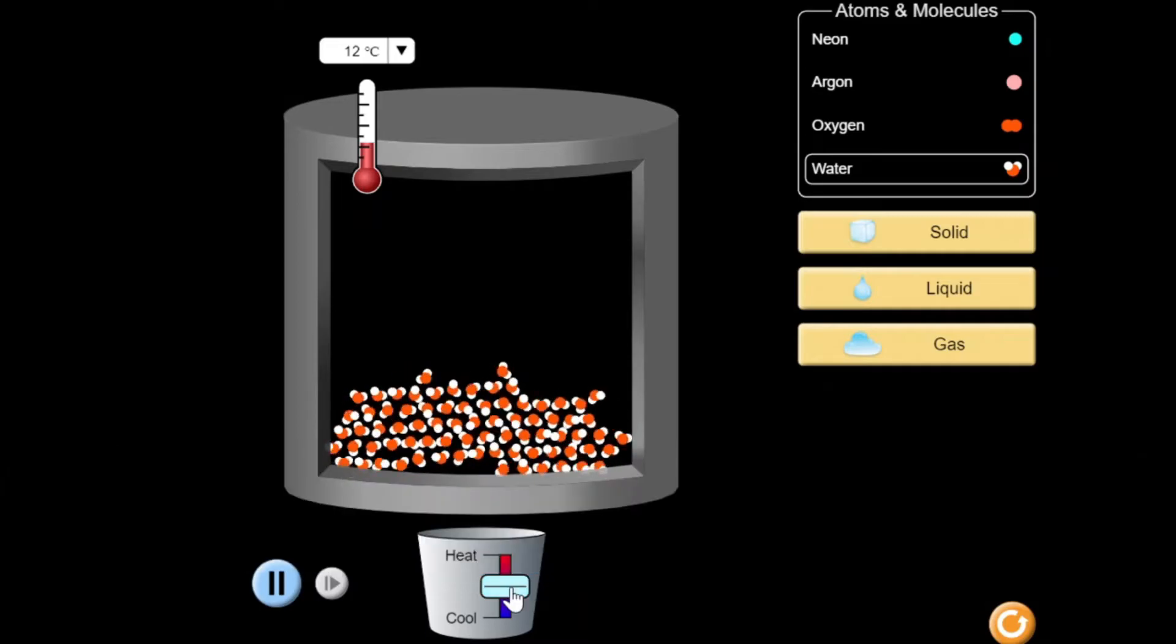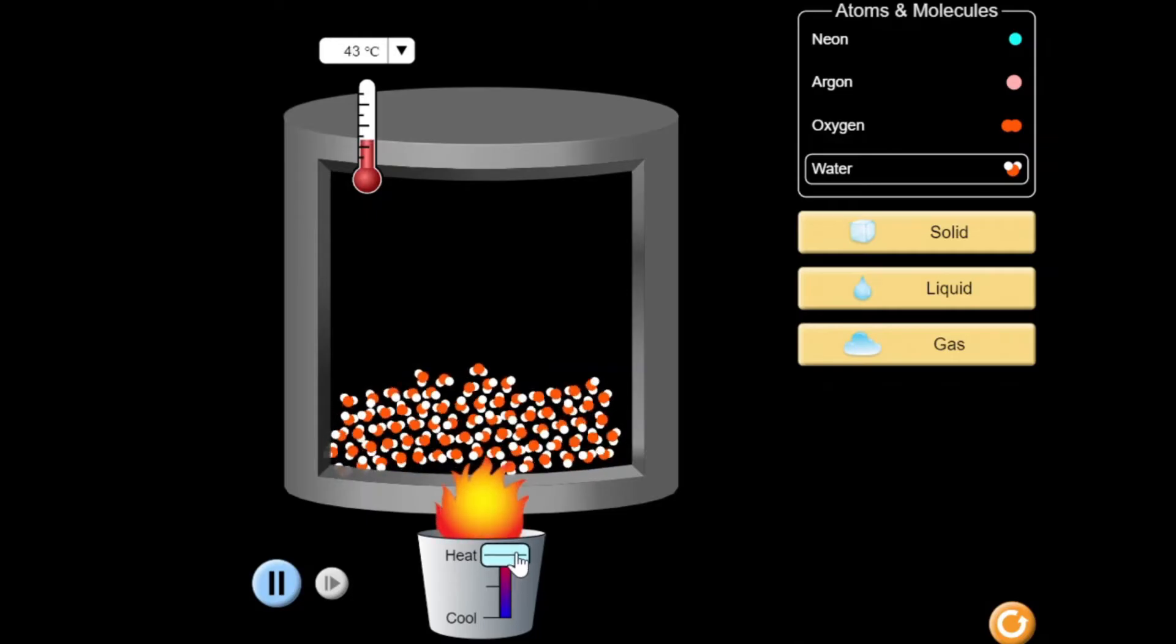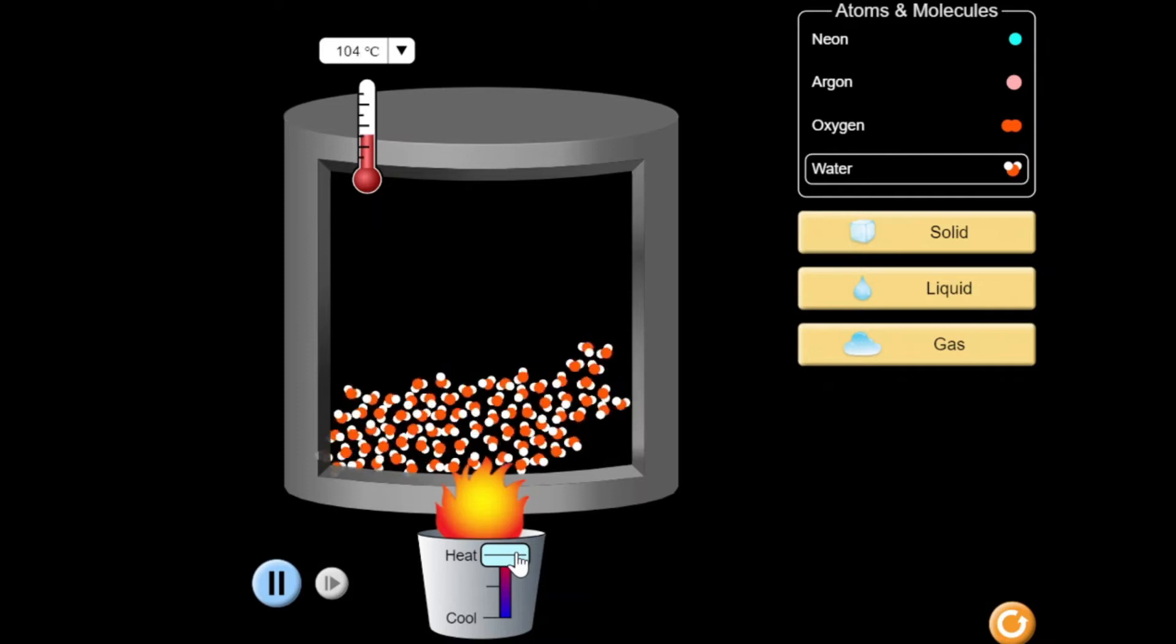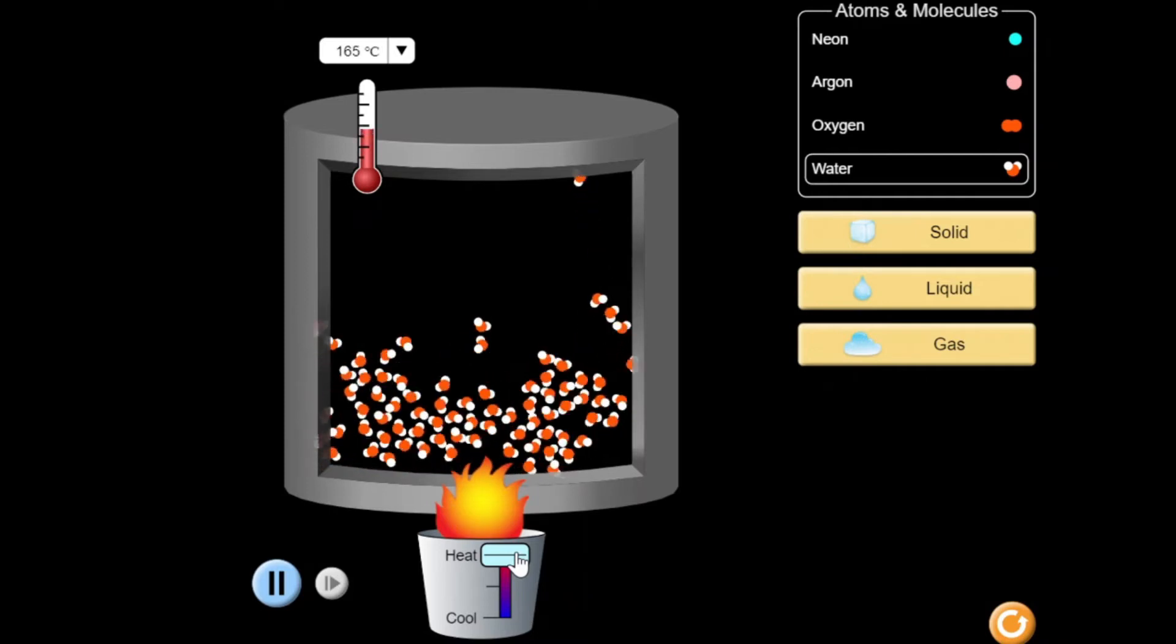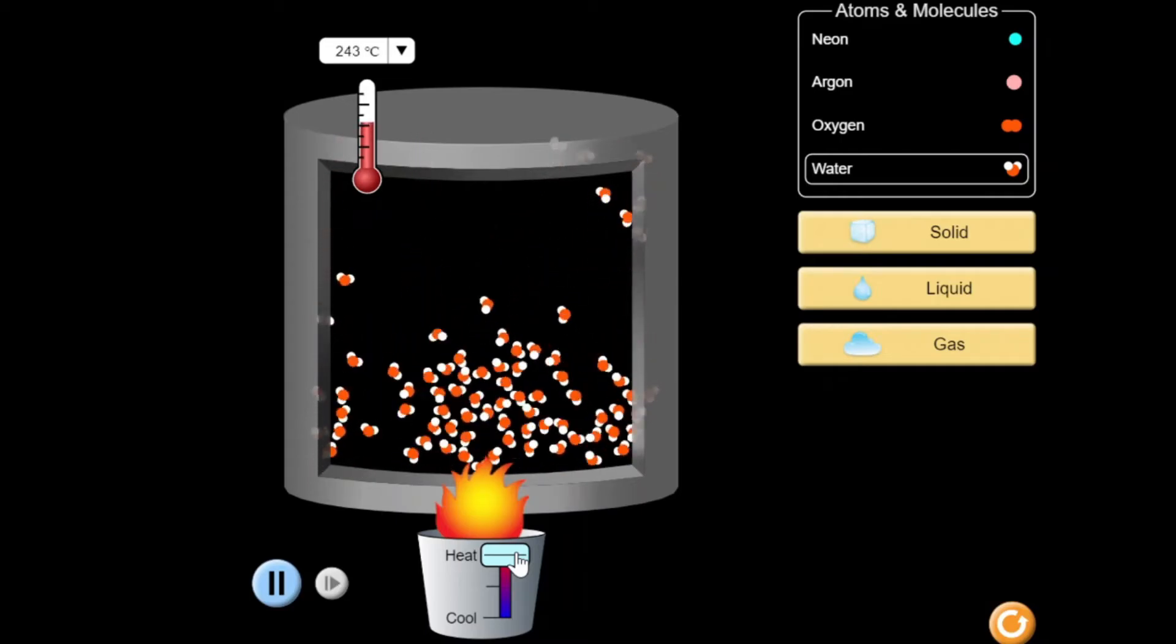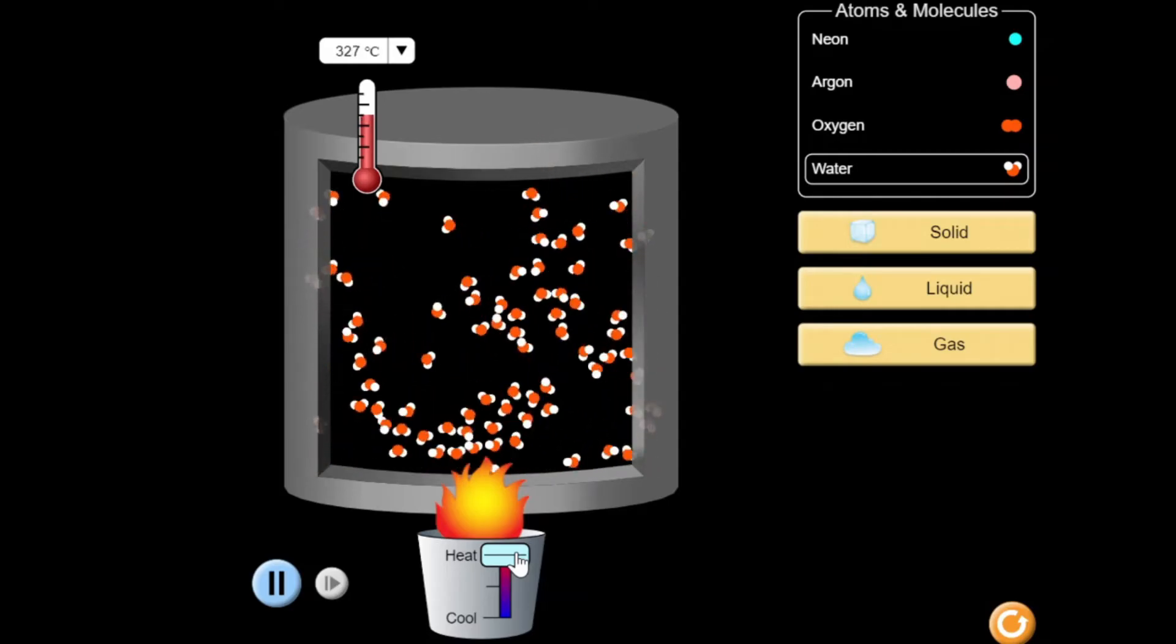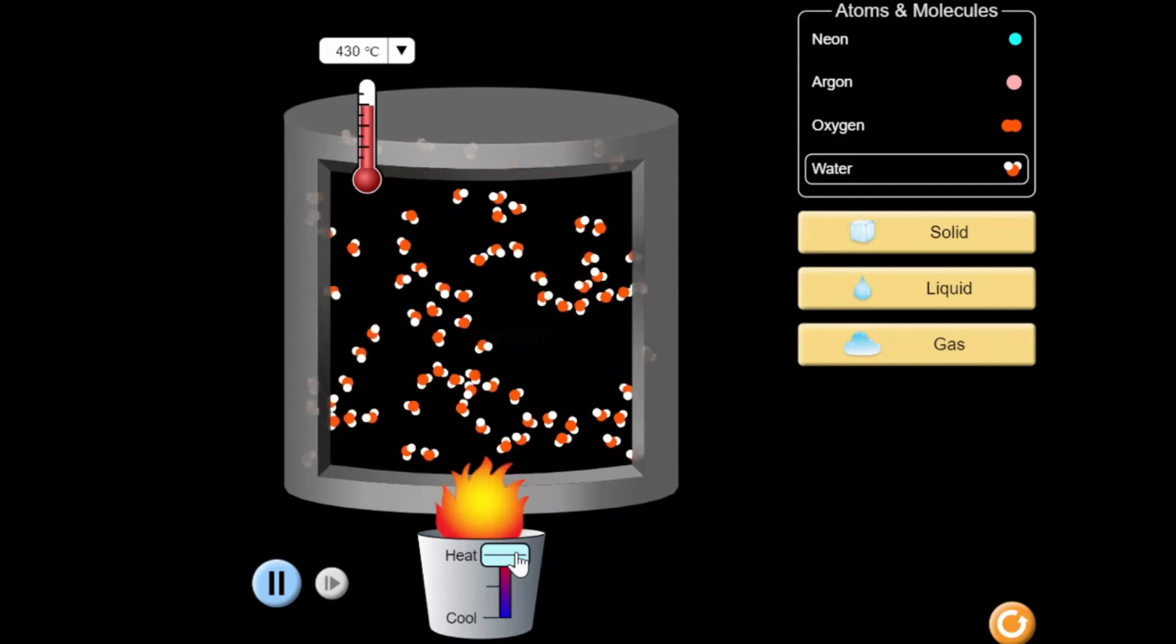Let us now add heat by moving the lever upward. As the temperature rises, observe the motion of the particles and their distances to one another. Always remember that the motion of the particles also denotes the amount of kinetic energy that the particles have.